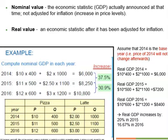So in 2014, nominal GDP is $10 × 400 pizzas plus $2 × 1,000 lattes, giving $6,000. You can do a similar calculation to get nominal GDP in 2015 and 2016 as shown on the screen. By using nominal GDP numbers, it might appear that national output has risen by more than 30% each year.